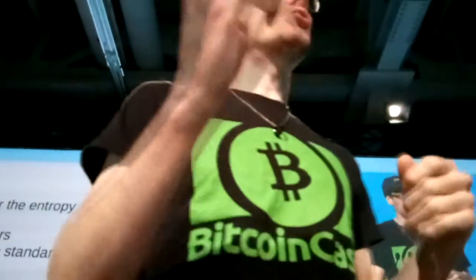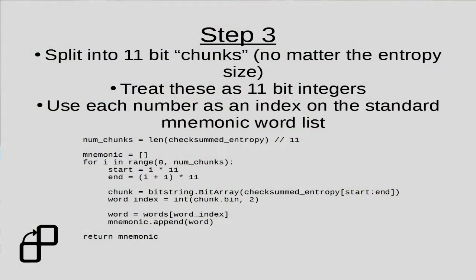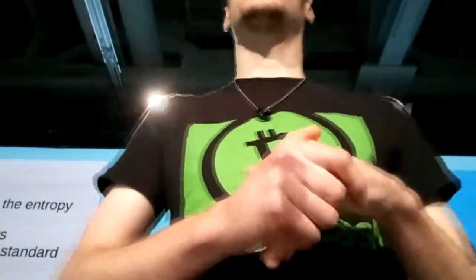The last step is we're going to use our BitArray and some cool Python array slicing to split our entropy and our checksum into 11-bit chunks. We're going to treat these 11-bit chunks of data as 11-bit integers. The 11-bit integer space is 0 to 2047. We're going to use each 11-bit number that we generate as an array index in the standard list defined by the BIP39 standard. You can read in the standard word list from a text file or hard-code it as a Python list into your code.